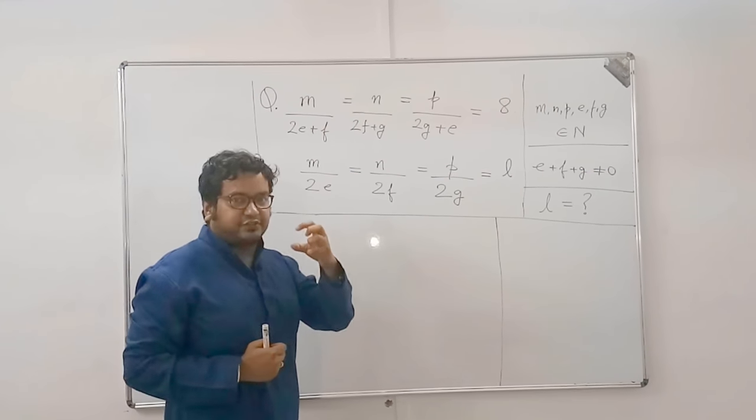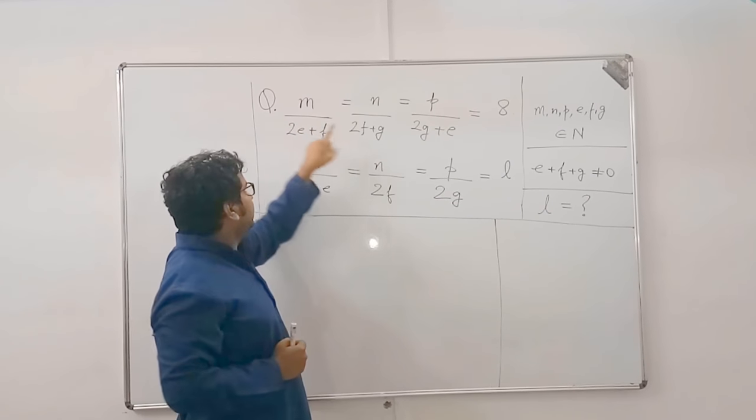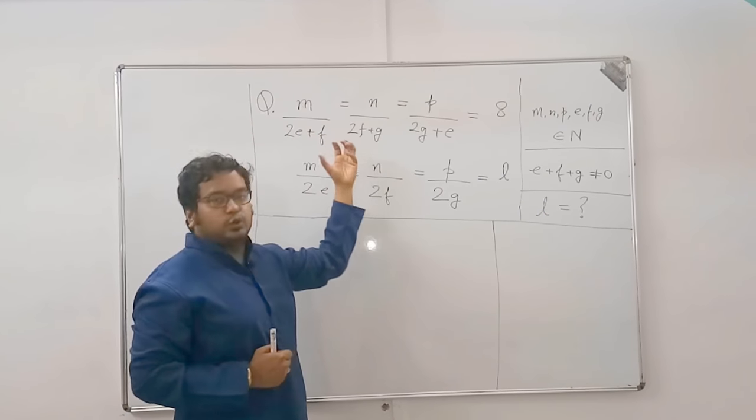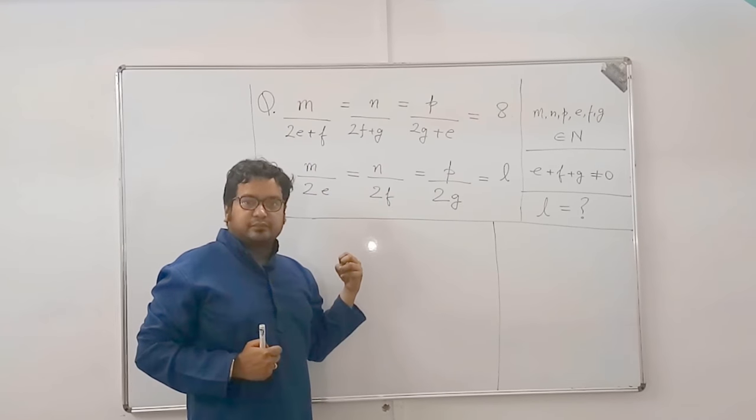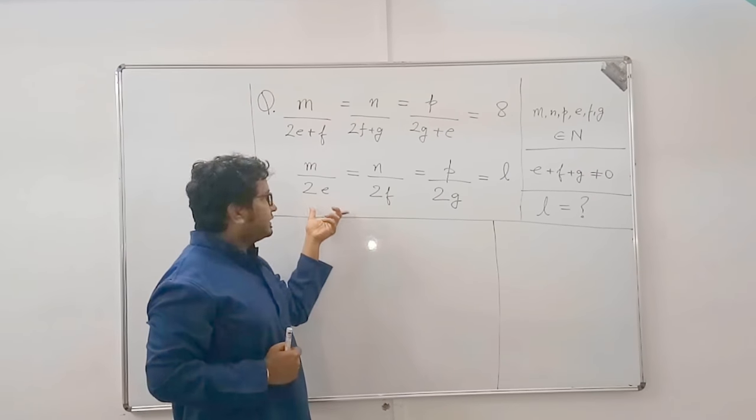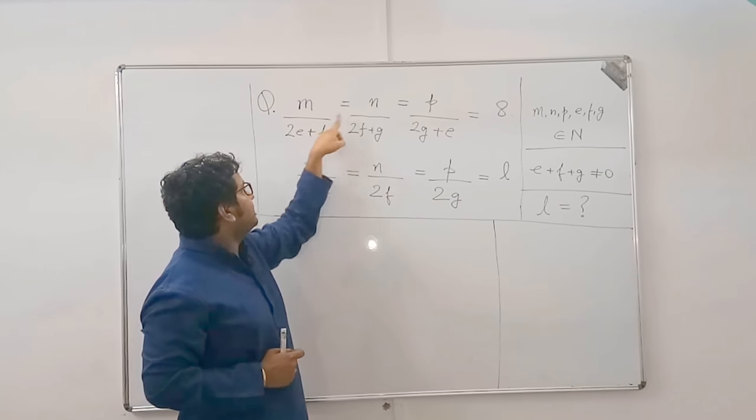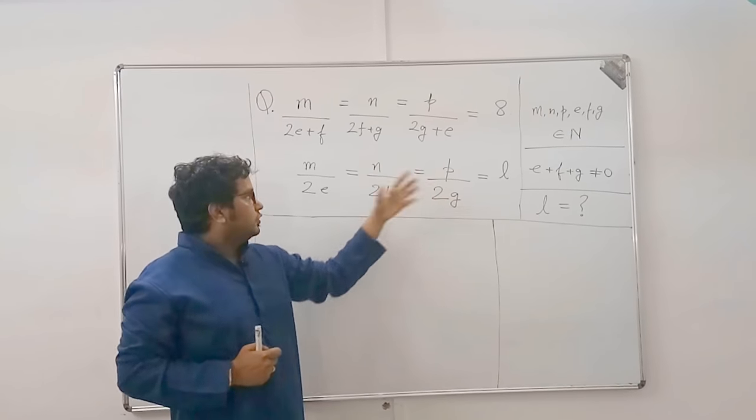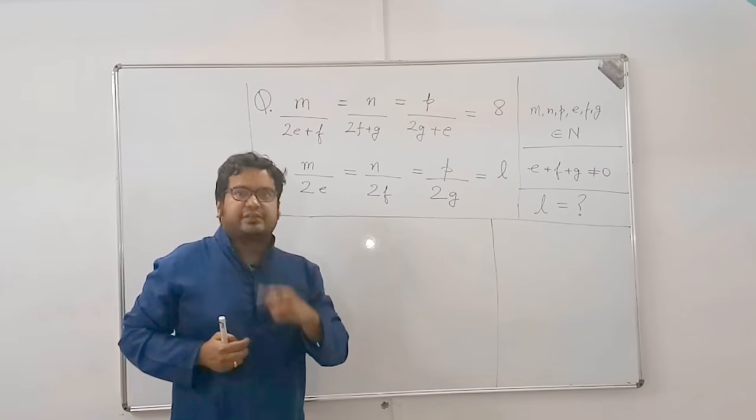The first thing which creates fear is use of multi-variables in a ratio. Here, m by 2e plus n is equal to n by 2f plus g. So when you look at this equation, there are so many variables and that too in a denominator form, in a ratio form. And there is another ratio adding another variable. So a total of 7 variables: m, n, p, e, f, g and n. There must be an easy way to solve it. We will learn 2 easy ways to solve it.